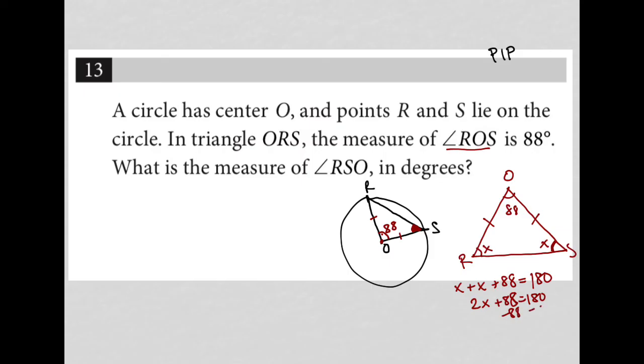Subtracting 88 from both sides, I am left with 2X equals 92. And dividing both sides by 2, I'm left with X is equal to 46. So the answer here is 46 degrees.